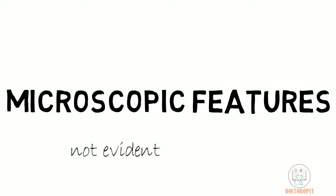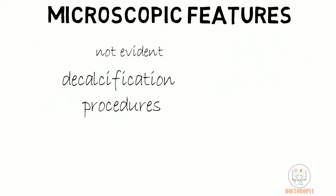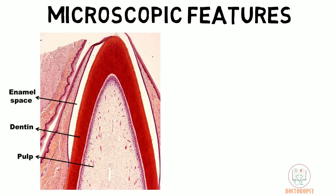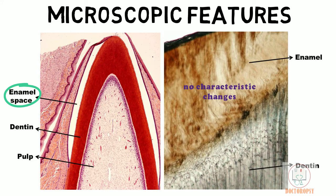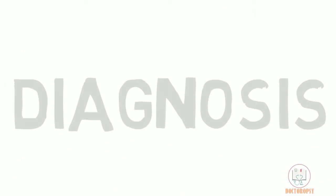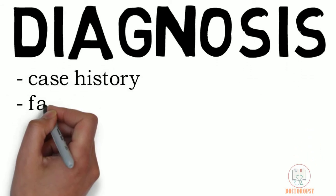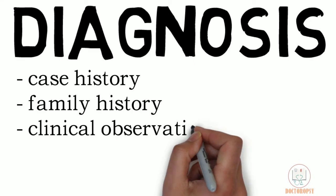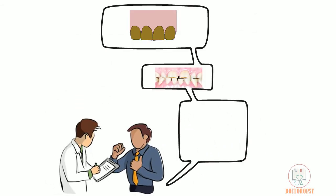The histological features are not readily evident in amelogenesis imperfecta, as calcification procedures done for sectioning of the tooth remove all enamel, and in ground sections no characteristic changes are seen. The diagnosis is basically based on detailed case history, family history, clinical observation, radiographs, and genetic studies. Patients complain of discoloration, rapid attrition, and increased sensitivity.